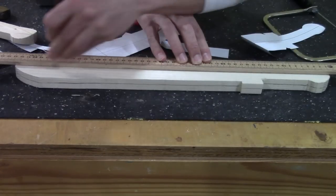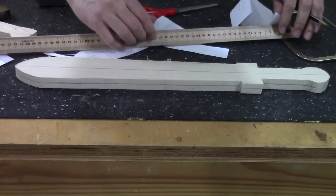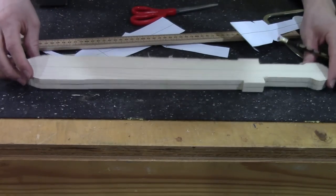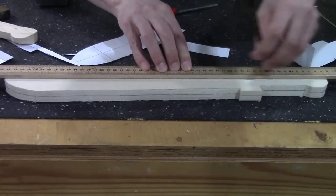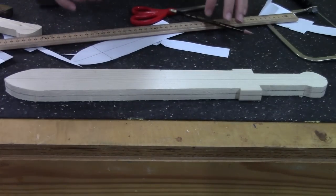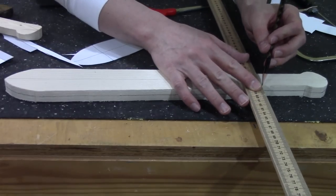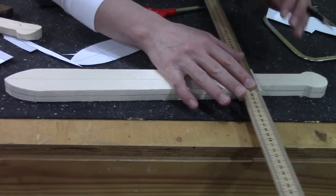Next I'm drawing a line down the center of the sword on both sides. And finally a couple lines across the guard of the sword.